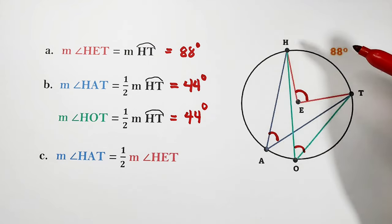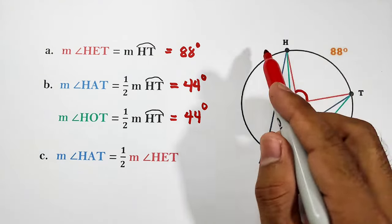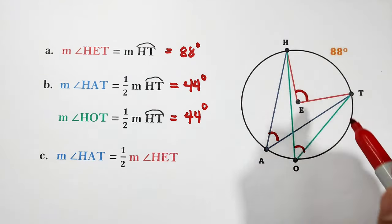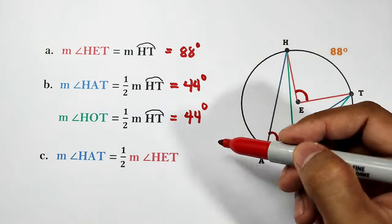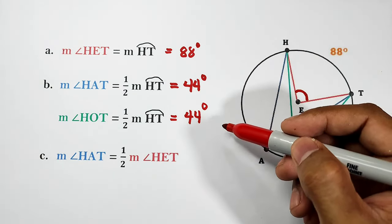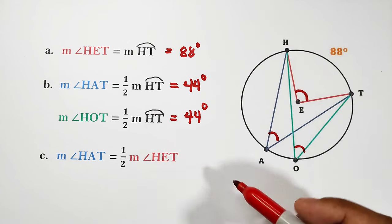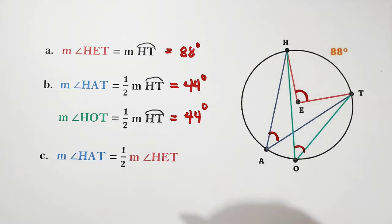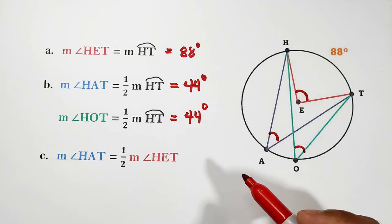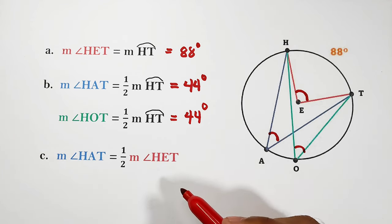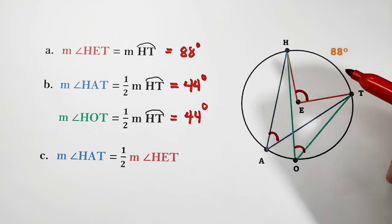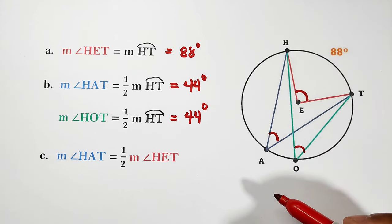If they have the same intercepted arc, they have the same measure — they are congruent. Angle HET and angle HOT are congruent. Inscribed angle is always half of central angle — that is the central angle theorem.